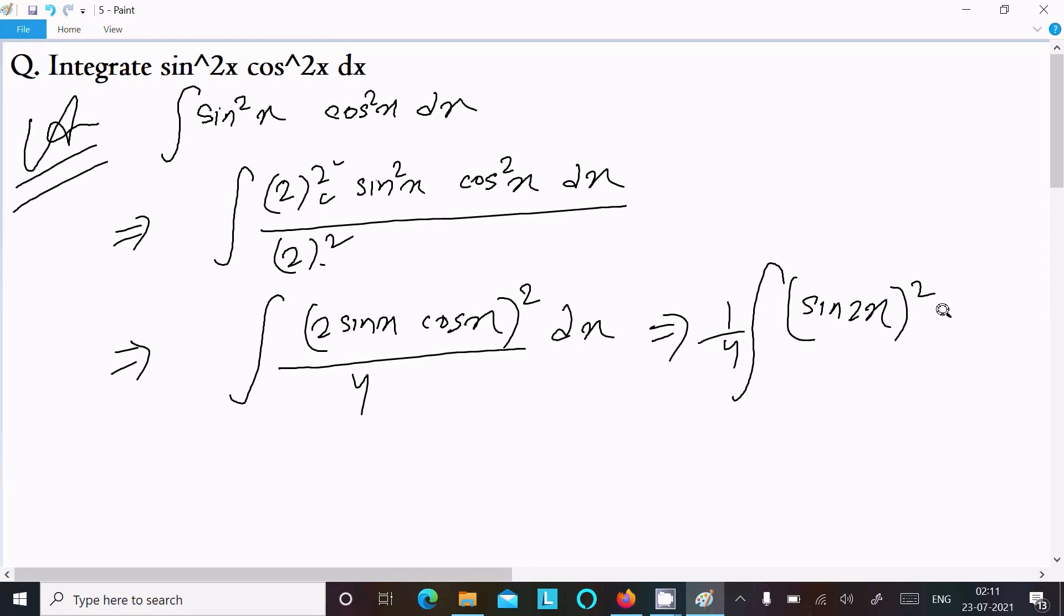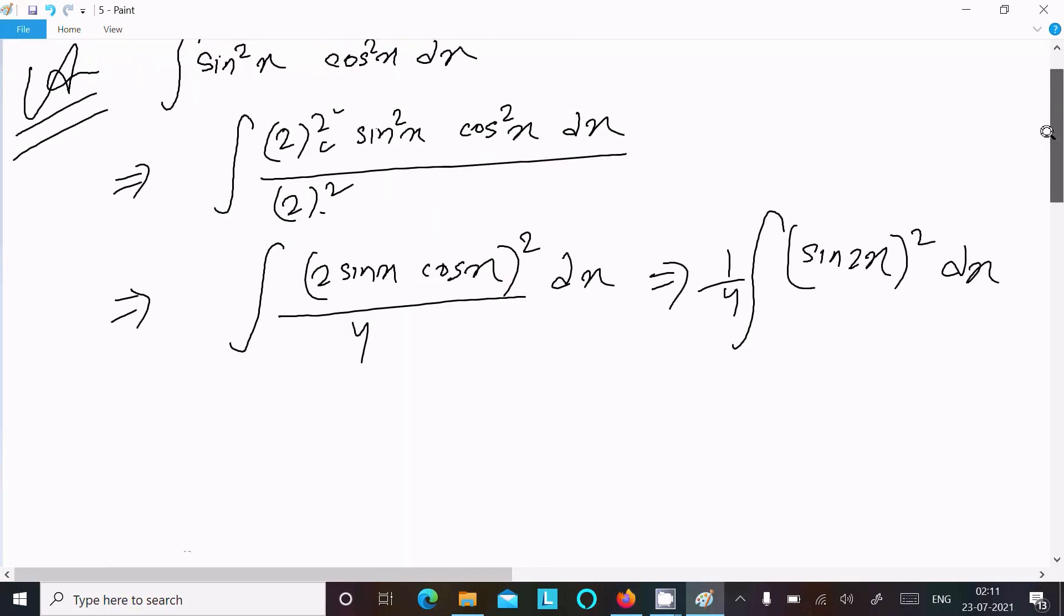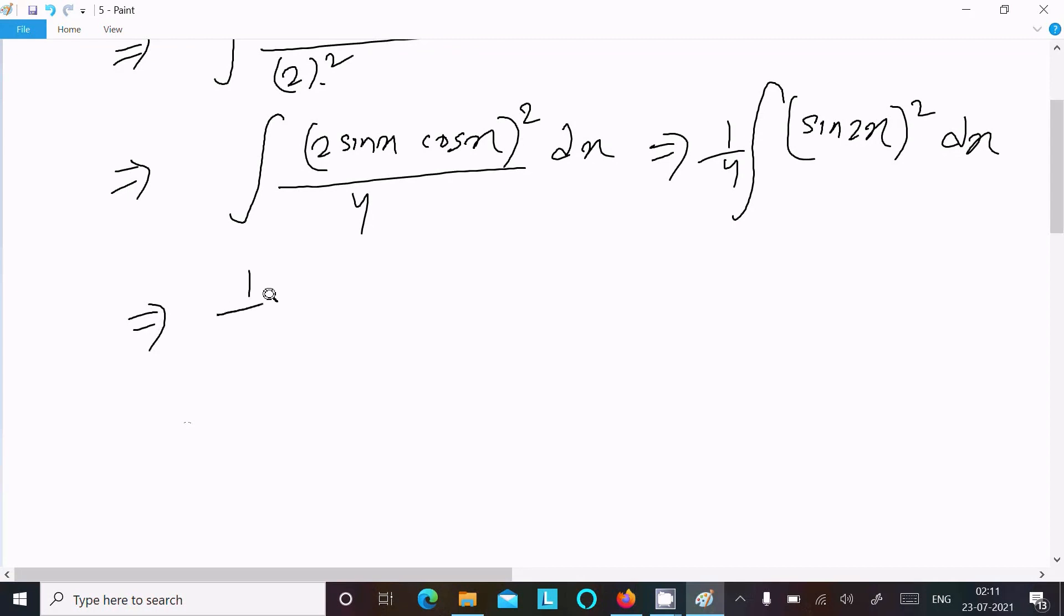We write 1/4 ∫sin²(2x) dx. Now we use the identity cos 2x = 1 - 2sin²x, or we can write sin²x = (1 - cos 2x)/2.